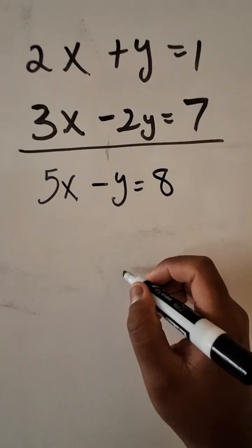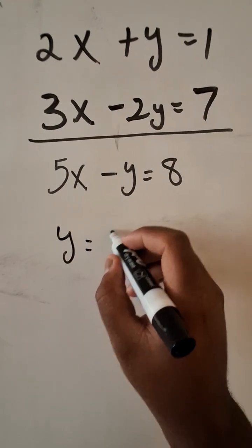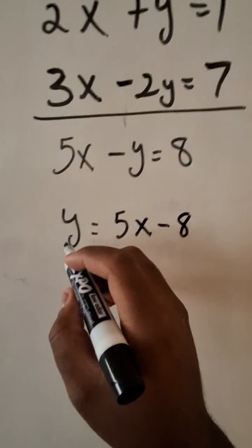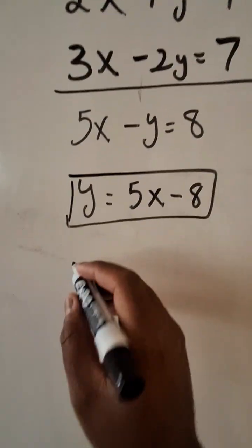I combined both equations to get one equation, and I solved for y. So we have y is equal to 5x minus 8. I square this equation and set it aside.